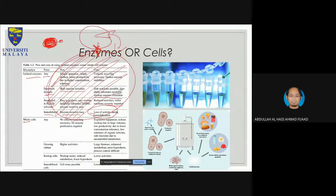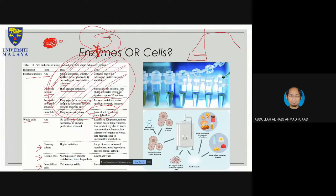For whole cells, they can be in any form: a growing culture, resting cells, or immobilized cells. In cell growth there are three phases. A growing culture is the first type; resting state for the enzyme is the second; and immobilized cell — where you have a solid support and try to immobilize a cell onto it — is the third, which is more difficult. I have never used it before, but the theory and application are there.